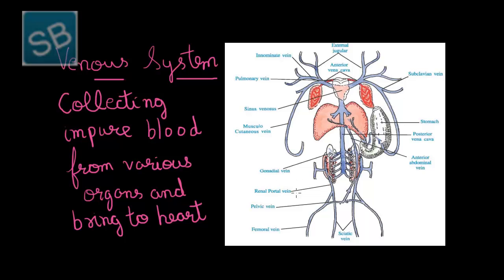These different veins carry impure blood from different organs and empty into the heart. For example, the renal-portal vein brings impure blood and empties into the posterior vena cava, which arises from the right lobe of the liver and empties into the sinus venous. Similarly, the gonadial vein brings impure blood from gonads and empties into the posterior vena cava and thereby into the sinus venous. Different veins bring impure blood from their respective organs and empty into the sinus venous via the posterior vena cava.